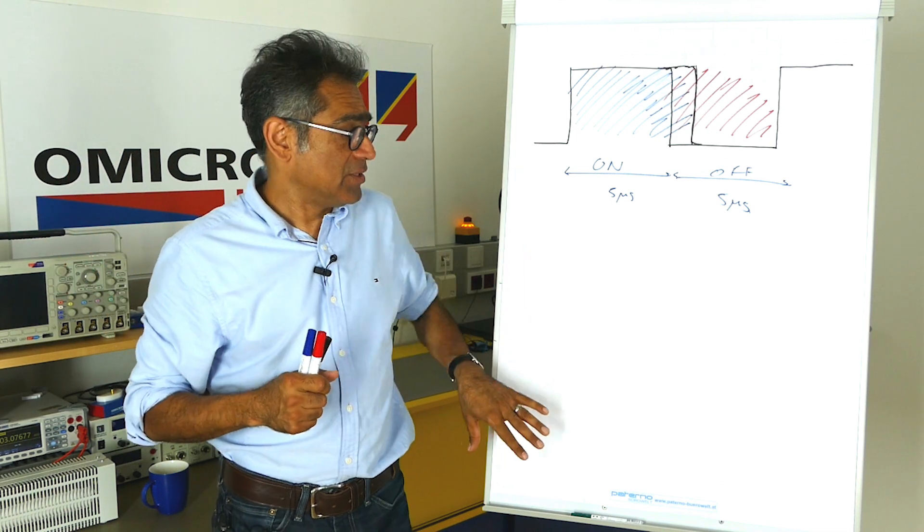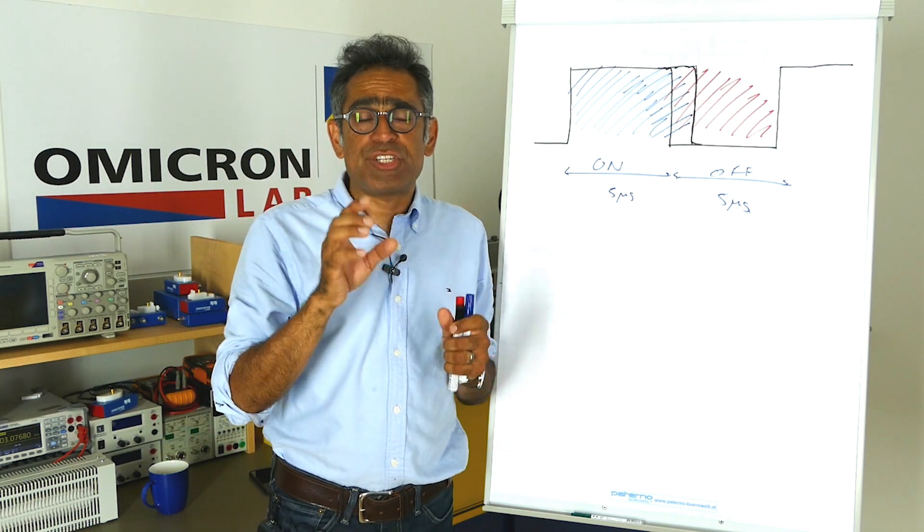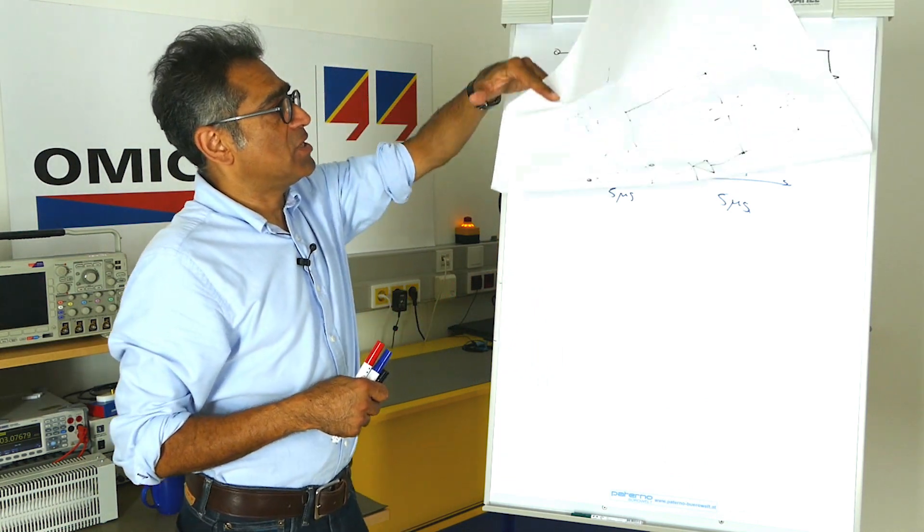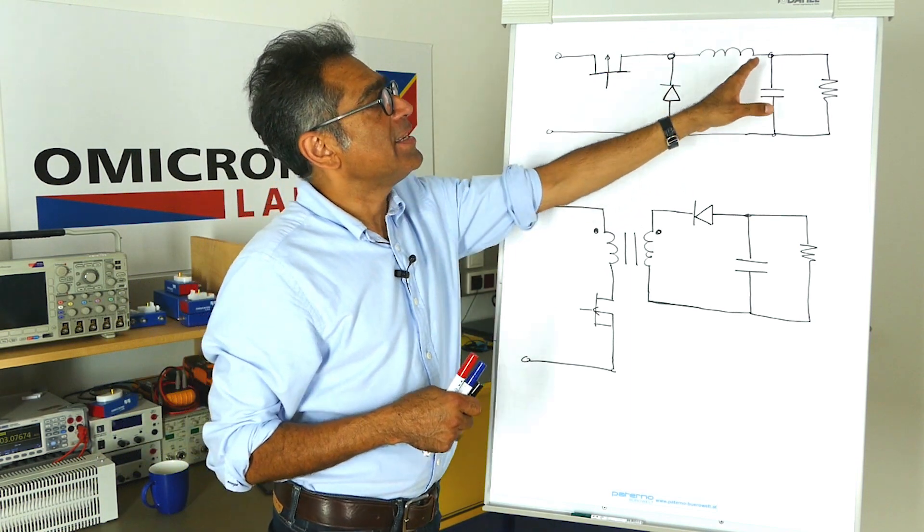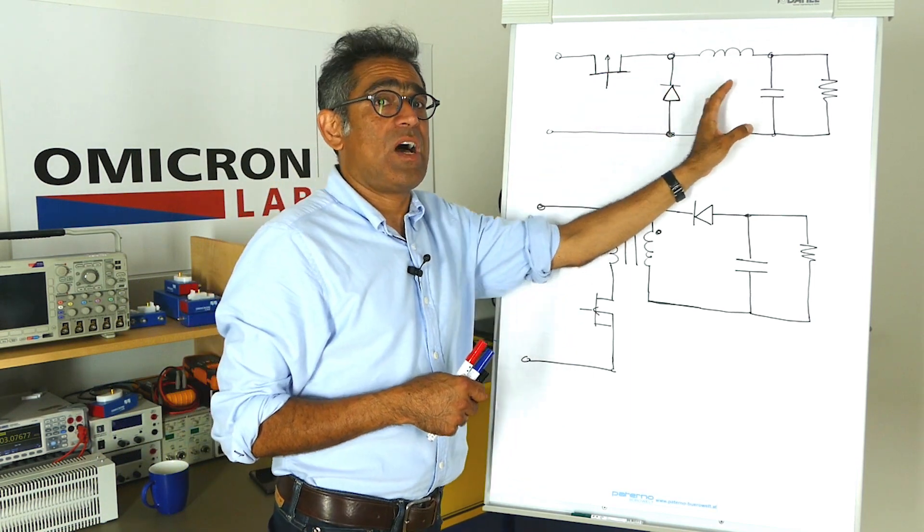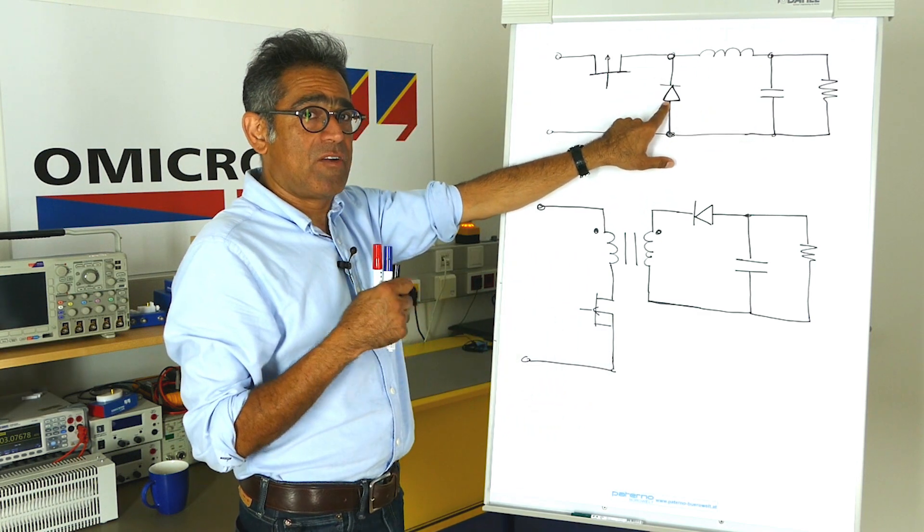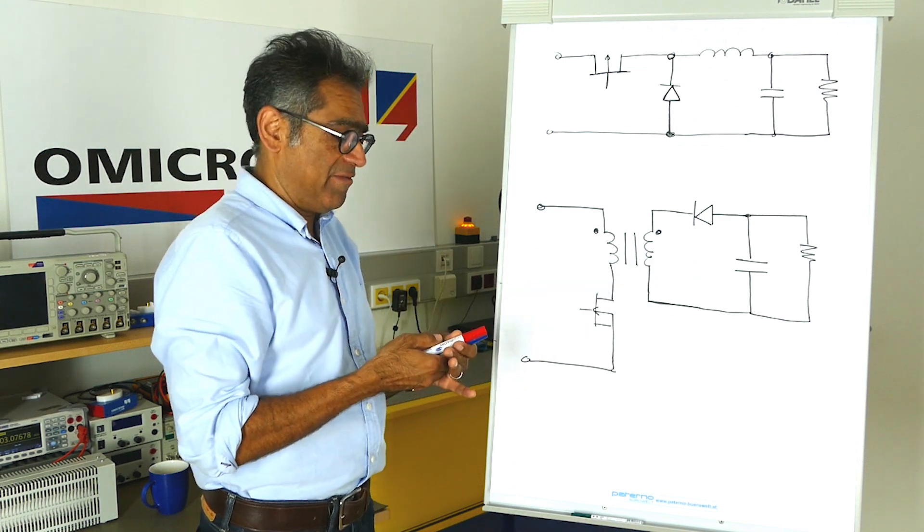One final thing before we go to the lab setup. It's extremely easy to tell which converters have a right-hand plane zero and which ones don't. All you have to do is look to see whether the diode is before the inductor or after the inductor. If the diode is before the inductor, you do not have a right-hand plane zero. If the diode is after the inductor, you do have a right-hand plane zero.